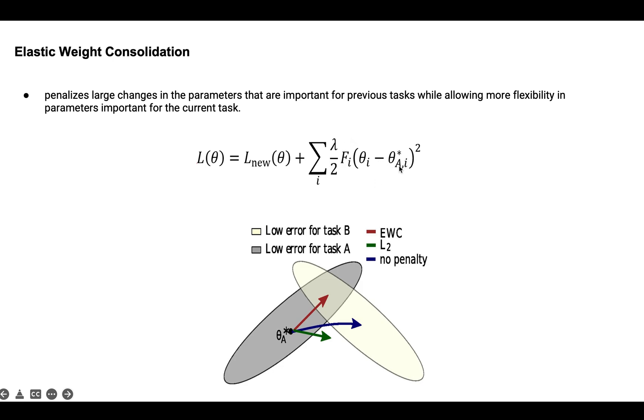And the penalty term, which is added here, is for the previous task, which is a quadratic function that penalizes the deviation of the model weights from their optimal values for the previous task.